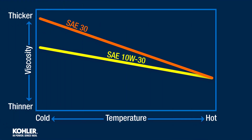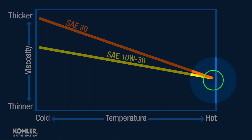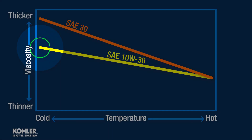Engine oil is thicker when cold and becomes thinner as it heats up. A straight 30 and 10W-30 will have the same viscosity when measured at 212 degrees, but the 10W-30 will be thinner when cold.